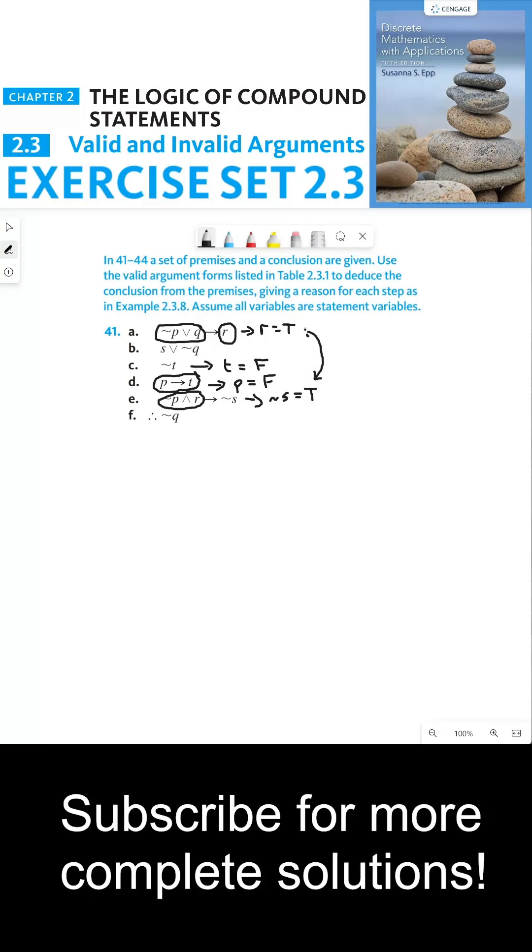So now that we know that not s is true, this means that s is false. And since s or not q is true, since it's an assumption and s is false, that forces not q to be true. And that rule of inference is elimination. So now we know that not q is true, which is our conclusion.